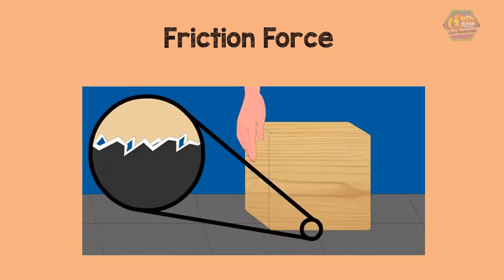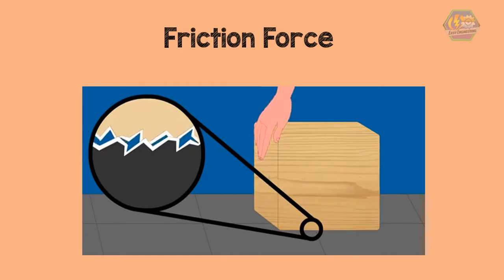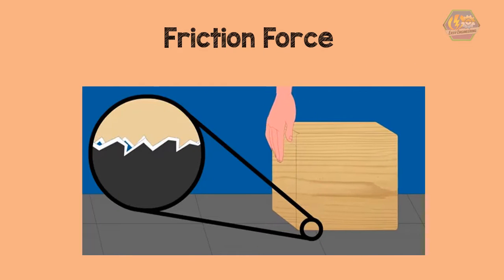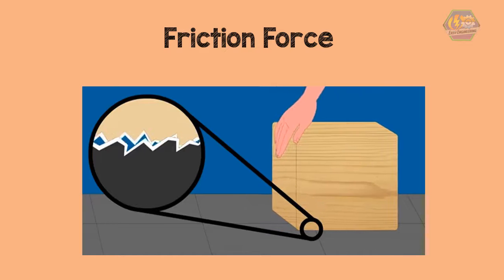Friction is the force that pushes back when things try to slide past each other. Without friction, we couldn't go anywhere. But friction also causes wear and tear on mechanical equipment, so it is not always helpful.